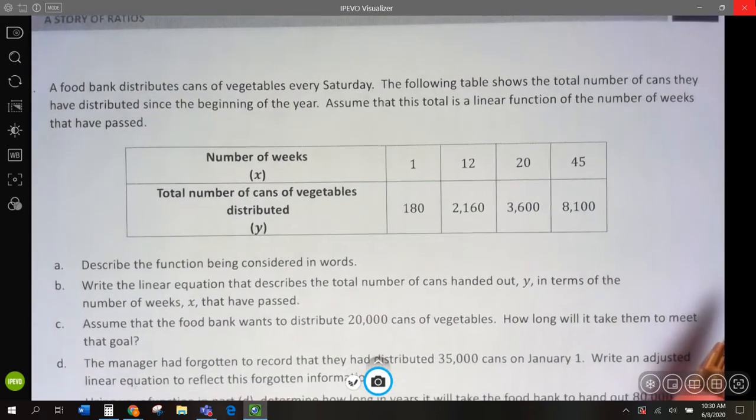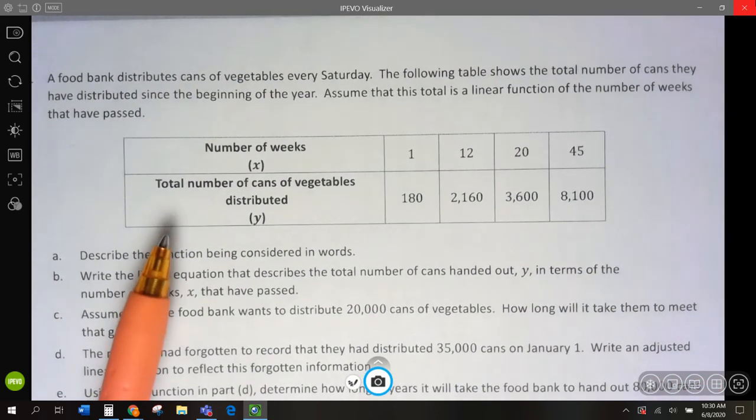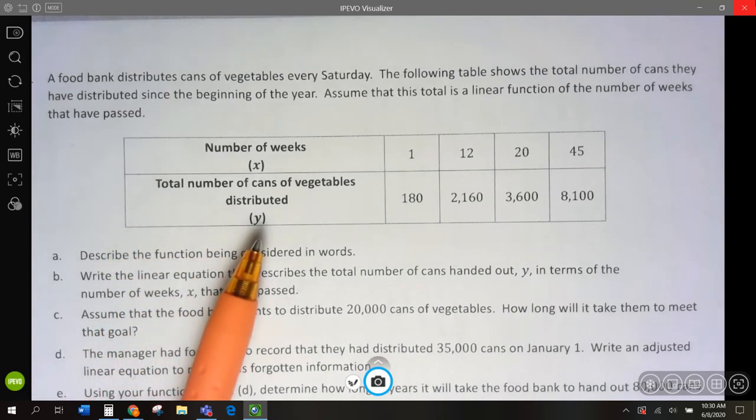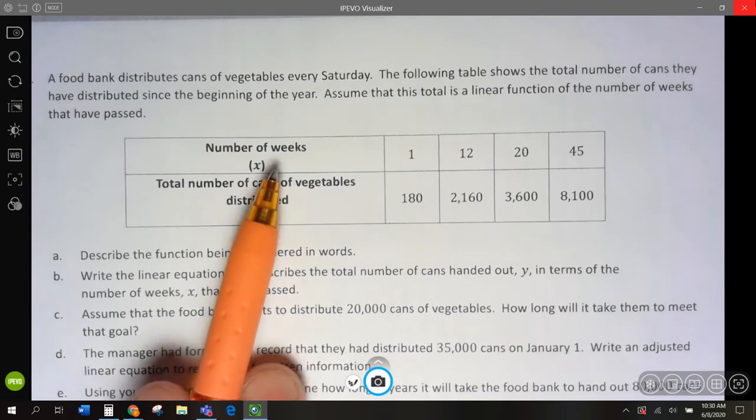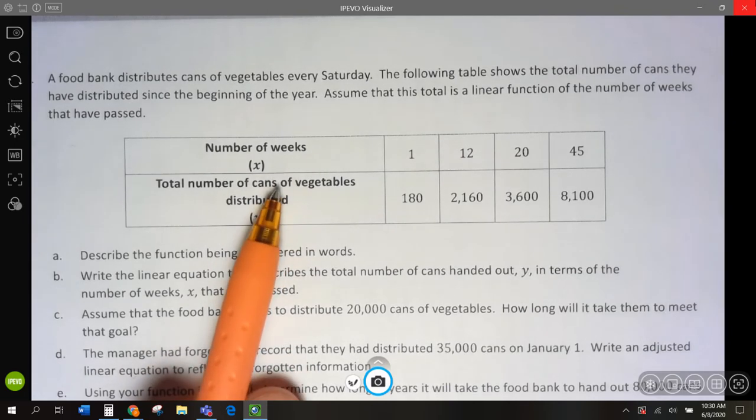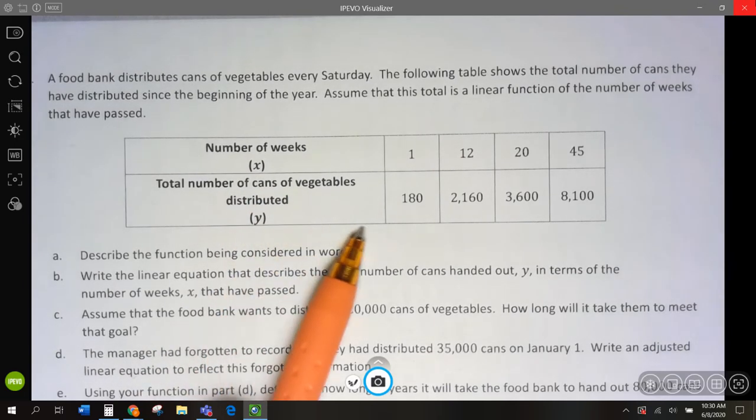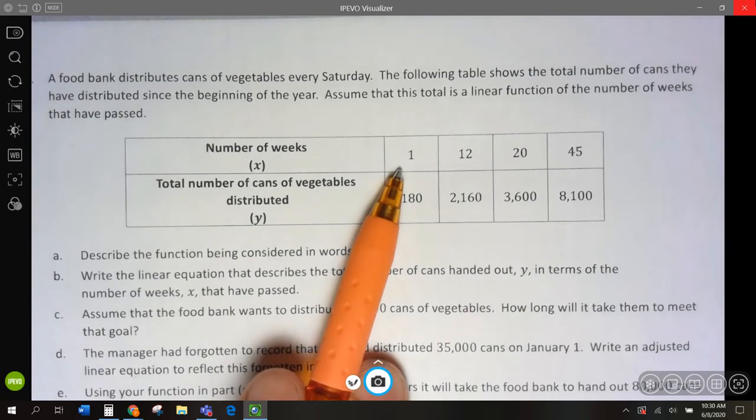Describe the function being considered in words. Basically we know that the number of cans depends upon the number of weeks. The number of cans we have is going to depend upon how many weeks we collected them.